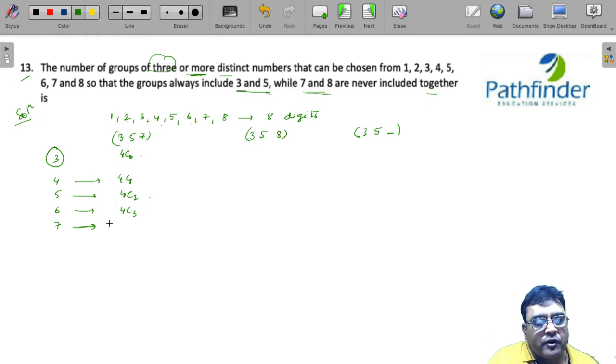And if I have to select 7 digits or 7 numbers, I already have 3. So, I can select 4C4. So, what happens is this is a number from 4C0 to 4C4. And by the property, we can do 2 to the power 4, which is 16. If you don't know the property, just add up.